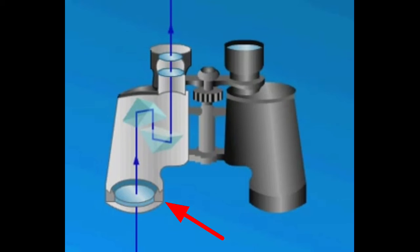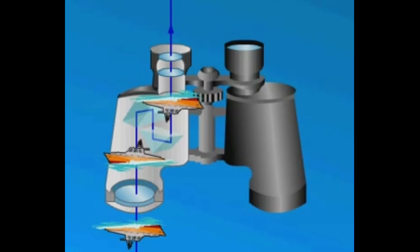The objective lens rotates the image upside down and right to left. A system of special prisms placed at right angles to one another not only reverses the path of the ray, but also reverses the image in the same way as the objective lens. Consequently, the resultant image is upright.